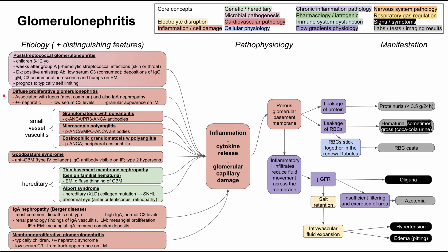Diffuse proliferative glomerulonephritis is most commonly associated with lupus and also IgA nephropathy. It can also present with a nephrotic picture, with proteinuria above 3.5 grams per 24 hours. Lab findings include low serum C3 levels, and immunofluorescence shows a granular appearance.